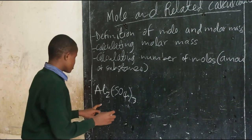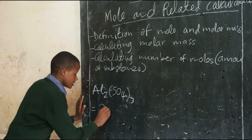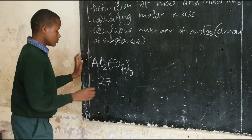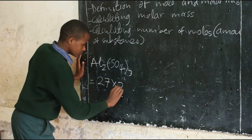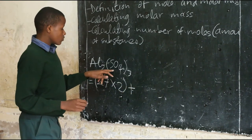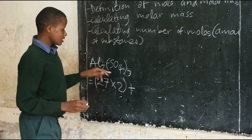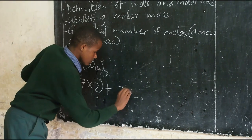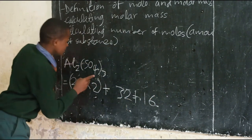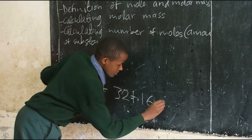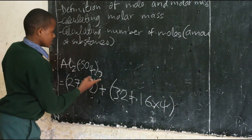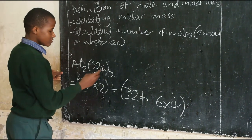The atomic mass of aluminium is 27, but there are two aluminium atoms, so you will multiply by 2. Then you add the atomic mass of sulphur, which is 32, plus that of oxygen, which is 16, but there are 4 oxygen atoms, so you multiply by 4. Then you add with the atomic mass of sulphur, but there are 2 sulphates.